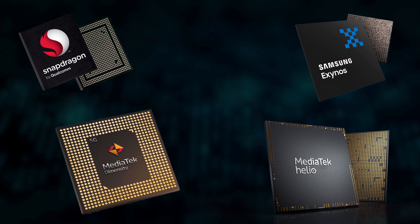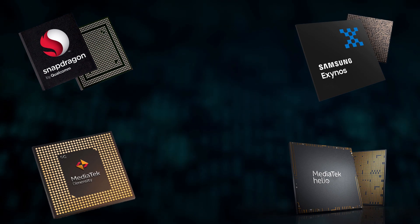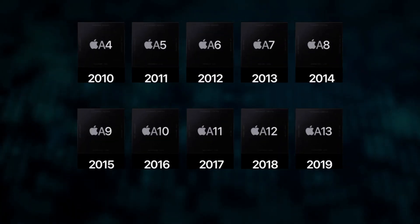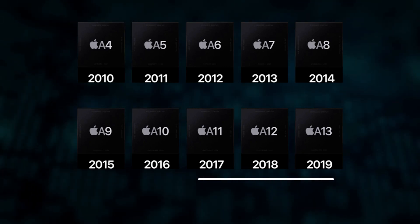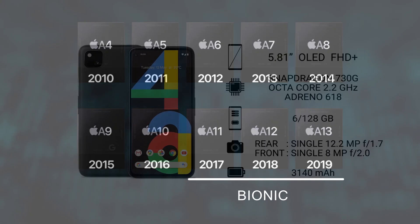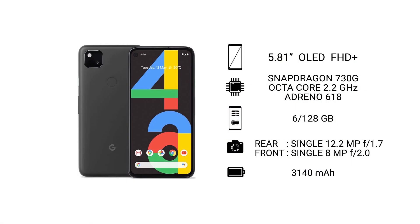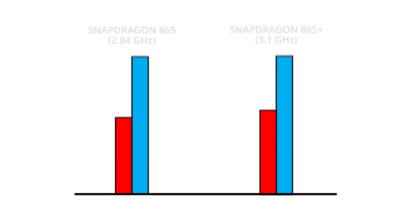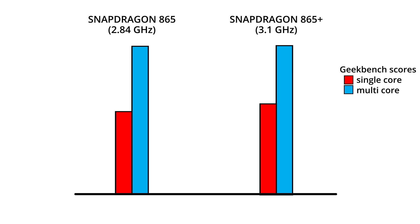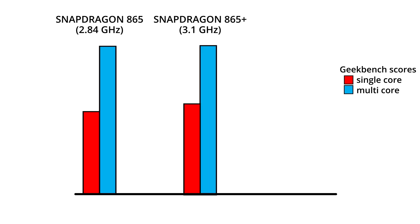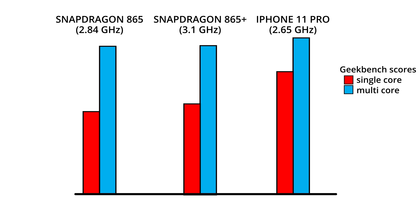On the Android side, the most common processors are the Snapdragon from Qualcomm, the Exynos from Samsung, the Helio and Dimensity from MediaTek, and the Kirin processors from Huawei. On the Apple side, we have the A-series processors — the recent ones starting from the A11 come under the Bionic lineup. Inside the Pixel 4a, we have the Snapdragon 730G chipset from Qualcomm, with an octa-core CPU at a maximum clock speed of 2.2 GHz and the Adreno 618 GPU.